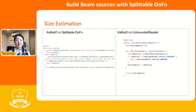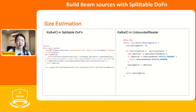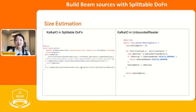If you want to do size estimation, the API in bounded source is bounded reader get estimate size bytes, and in unbounded source it's unbounded reader get split backlog bytes. When you switch to Splittable DoFn, you implement the get size interface. If you provide the get size function, the SDK will query the size on the element and restriction pair. It's also okay not to provide that function because the SDK will also query the restriction tracker progress to get size information. Let's look into the Kafka example — a simple code snippet of how we do size estimation. The given element is a Kafka source descriptor, which is always the topic and partition, and we also have the current restriction.